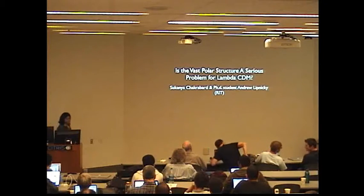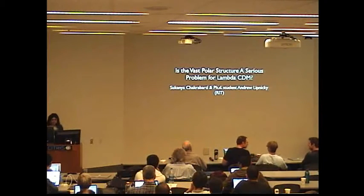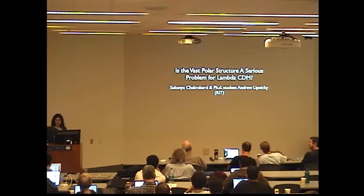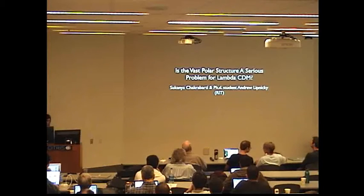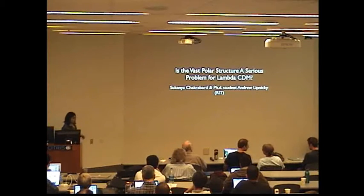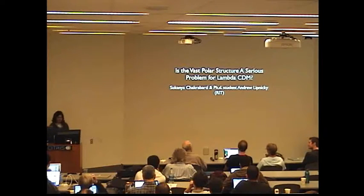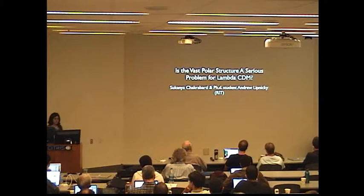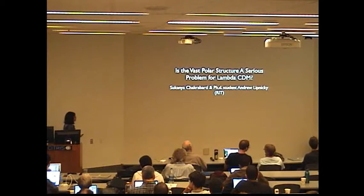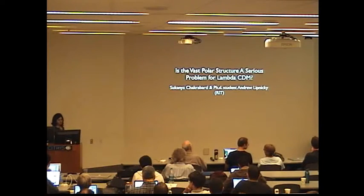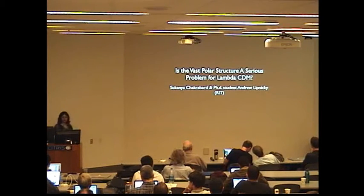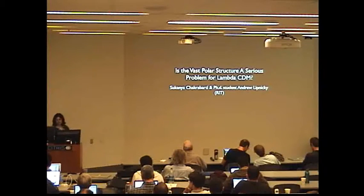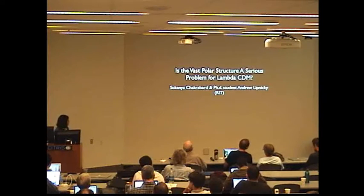I'm going to talk about recent work that I've done with my PhD student, Andy Lipnicki, at RIT. We have been trying to see if the vast polar structure of dwarf galaxies is a serious problem for lambda CDM. Most of the new results that I'll be showing you are from a paper that we just submitted, so I welcome your comments and feedback. This is still work that's in progress in some sense.